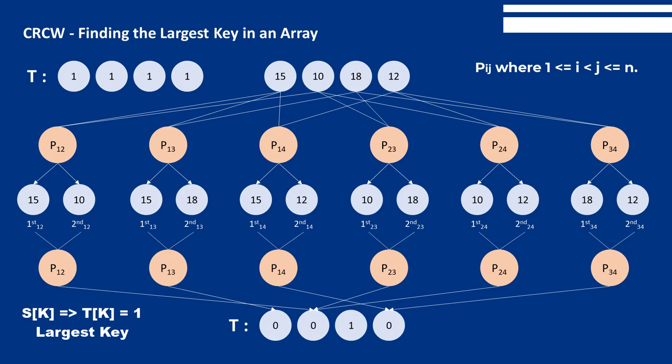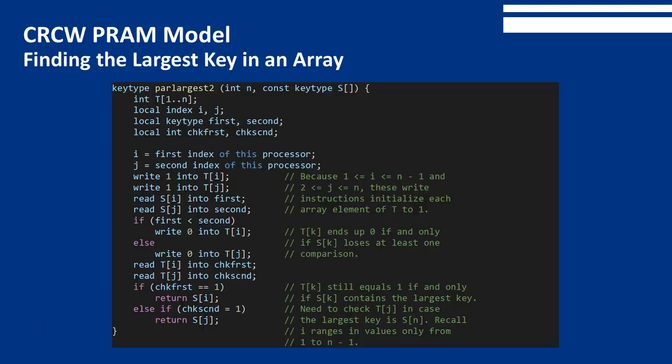Notice in the algorithm that when more than one processor writes to the same memory location, they all write the same value. This means the algorithm works with common write, arbitrary write, and priority write protocols. There is no loop in this algorithm, which means it finds the largest key in constant time.